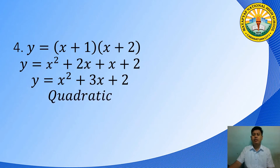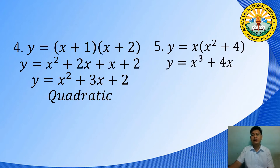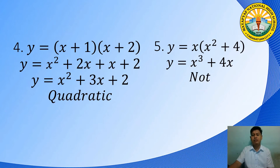And number 5: y is equal to x times the quantity x squared plus 4. Just like in the previous example, we must simplify it first so that we can see if it will become a quadratic function or not. By multiplying the expression at the right side of the equation, we will get y is equal to x cubed plus 4x. Since the degree is 3, it is not a quadratic function.